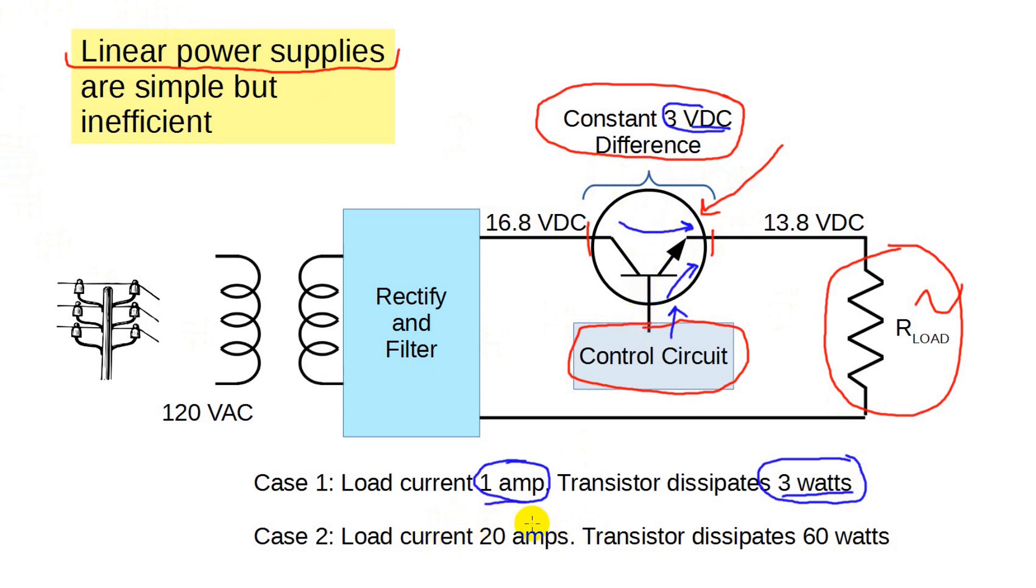Now, let's transmit. Our radio wants substantially more current, but still at 13.8 volts. The control circuit senses that the voltage across the load is drooping, so it causes the transistor to pass more current. Given that all the load current also passes through the pass transistor, that means 20 amps, we still have our three-volt drop, so now the transistor is dissipating 60 watts. Yep, that's 60 watts of real heat that has to go somewhere. That transistor had better have a really big heat sink.